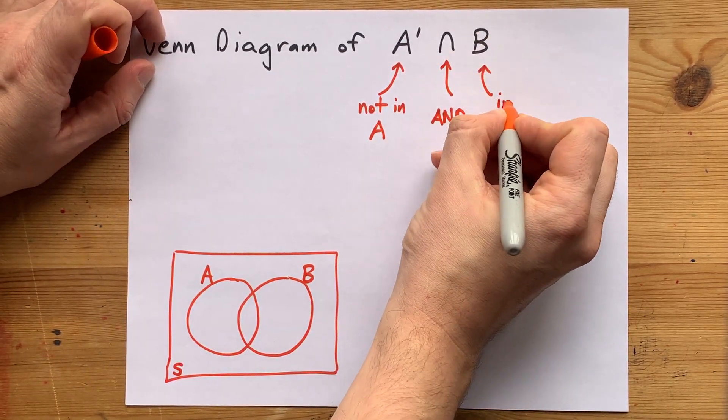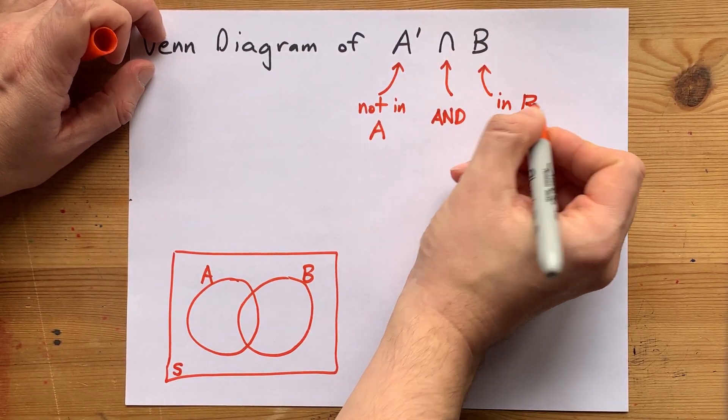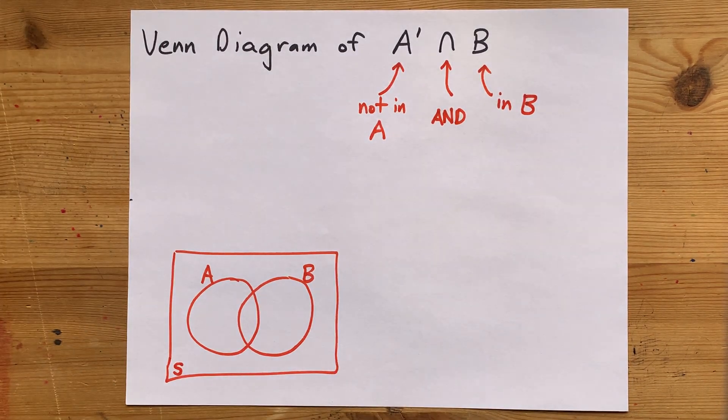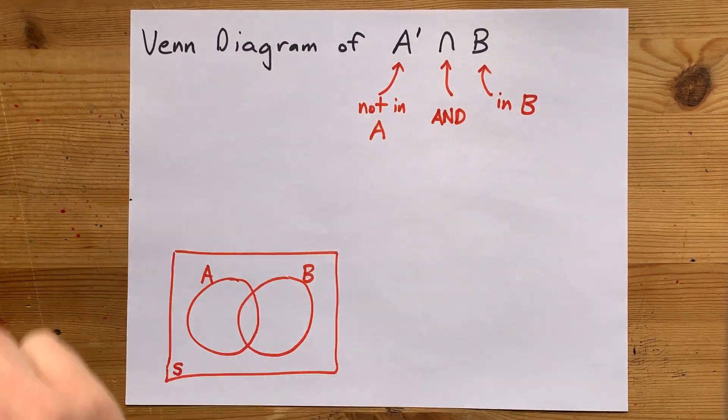B is short for B, which means that if you're going to shade something, it has to be inside of B as well, especially when you have the word and here.